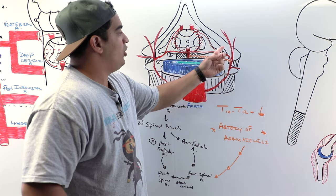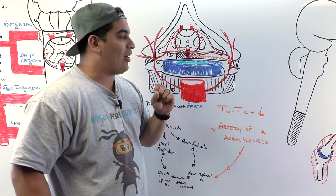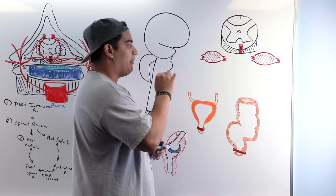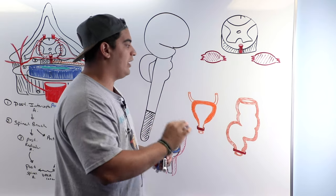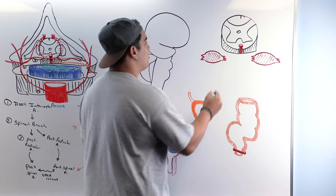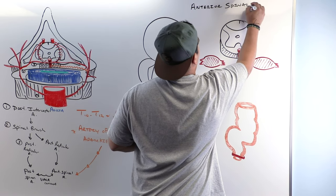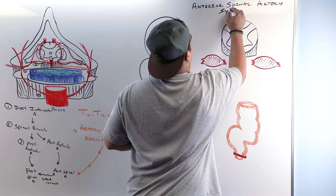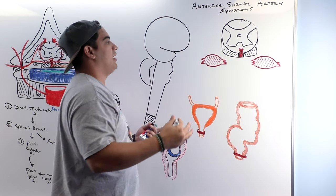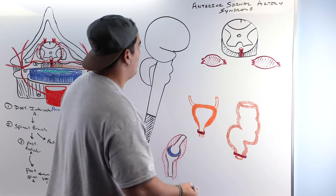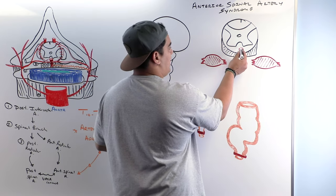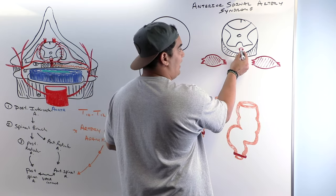If you hit this vessel during an aortic aneurysm repair, that causes the symptoms we discussed at the beginning of the video. This is a clinical condition called anterior spinal artery syndrome — whenever the anterior spinal artery is not getting enough blood supply, is damaged, or is occluded. It's not delivering blood to the anterior two-thirds of the spinal cord, and all of that tissue is compromised.